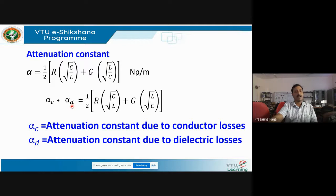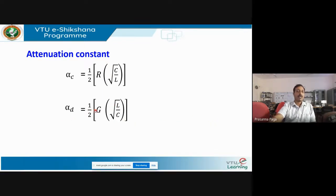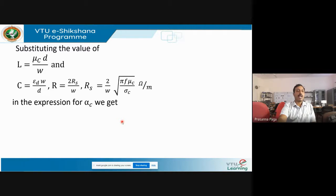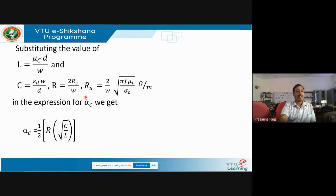The attenuation constant α can be split into α_c (conductor loss) and α_d (dielectric loss). α_c = (1/2)·R·√(C/L). Substituting R = 2R_s/w, L = μ_c·d/w, C = ε_d·w/d, and R_s = √(πf·μ_c/σ_c), and simplifying with μ_c = 1 (non-magnetic), gives α_c = (1/d)·√(πf·ε_d/σ_c), which simplifies to α_c = (1/d)·√(πf·ε_d/σ_c).